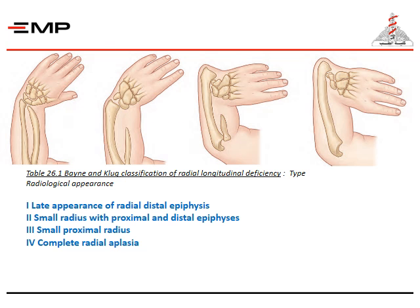As shown in the figure, the Bayne and Klug classification of radial longitudinal deficiency has four types. Type one: late appearance of the radial distal epiphysis. Type two: a small radius with proximal and distal epiphysis. Type three: a small proximal radius. And type four: complete radial aplasia.